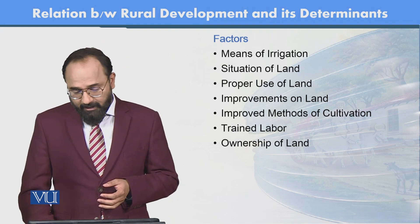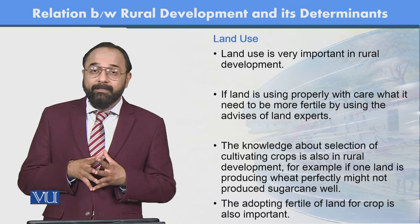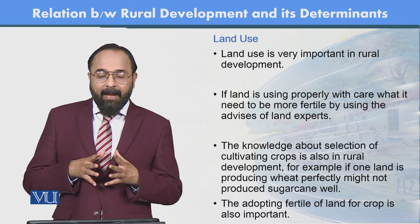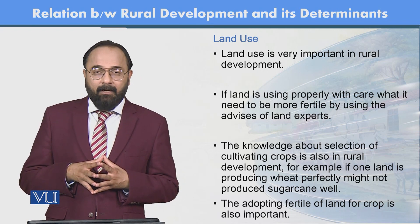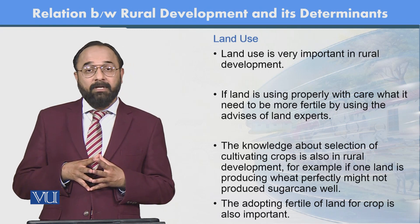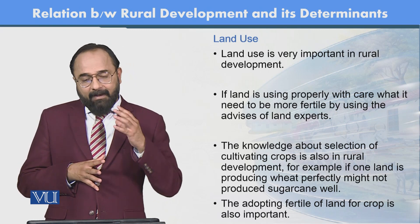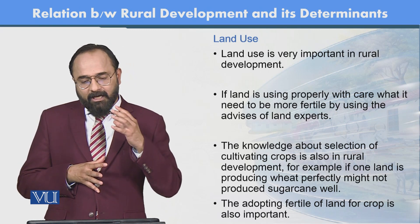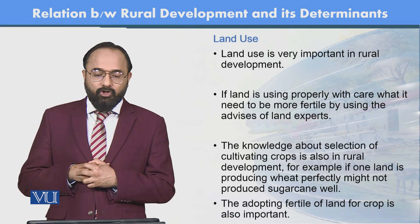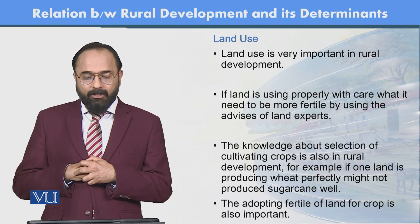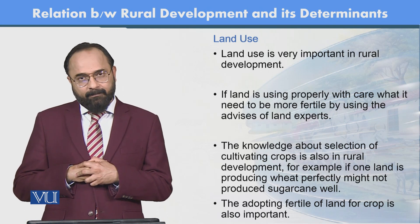Factors affecting productivity include: means of irrigation, situation of land, proper use of land, improvements on land, improved methods of cultivation, trained labor, ownership of land, and transportation. Land use is also very important in rural development — if land is used properly with care and made more fertile using the advice of land experts and institutions, it contributes to rural development.